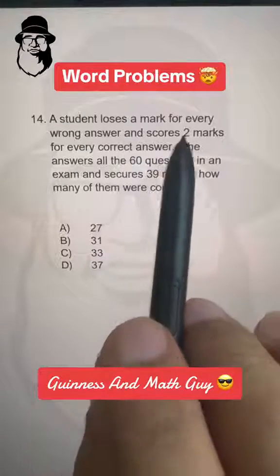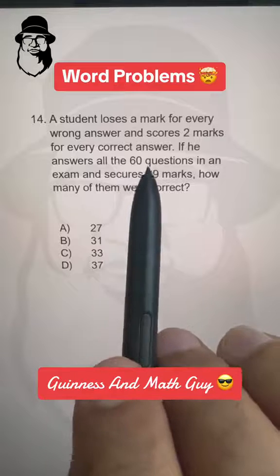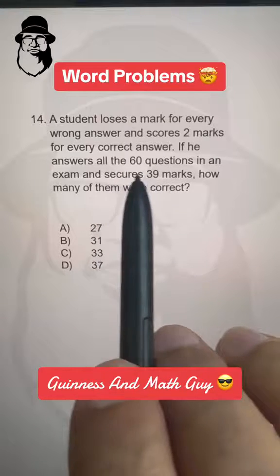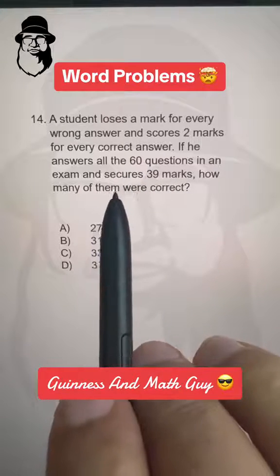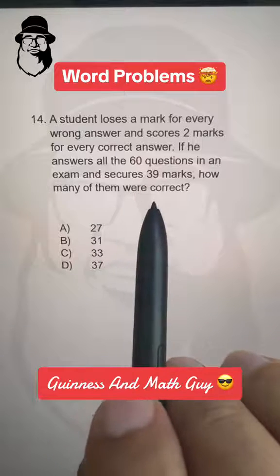A student loses a mark for every wrong answer and scores two marks for every correct answer. If he answers all the 60 questions in an exam and secures 39 marks, how many of them were correct?